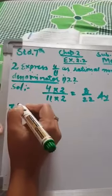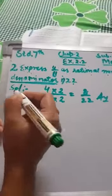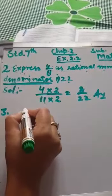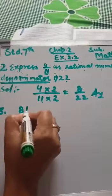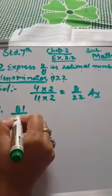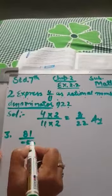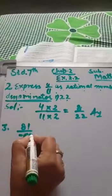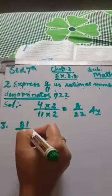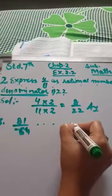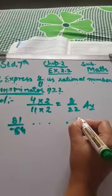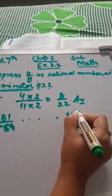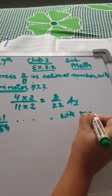Sum number 3 — students, you all have the book so I am not going to write the full statement. I have to convert 81 over minus 54 as a rational number with the numerator 3.